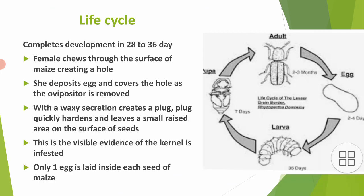The life cycle completes development in 28 to 36 days. In summer, they complete their life cycle in 30 to 40 days, while in winter they complete their life cycle in 123 to 148 days.